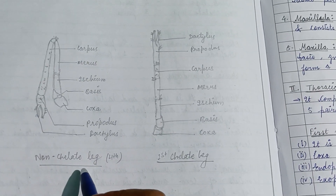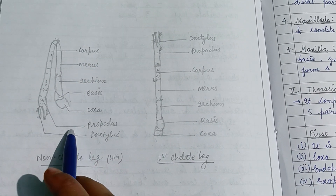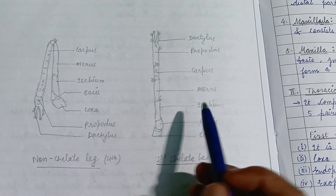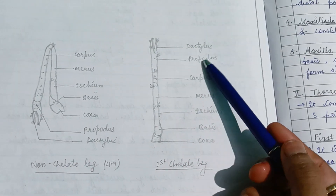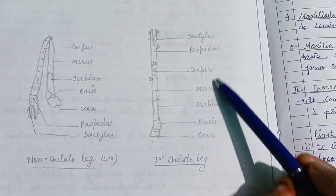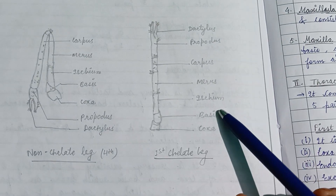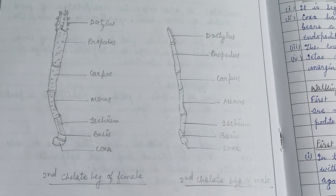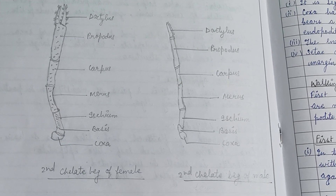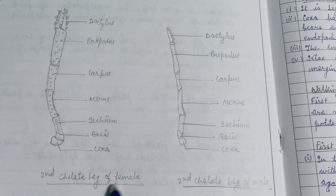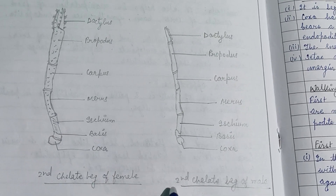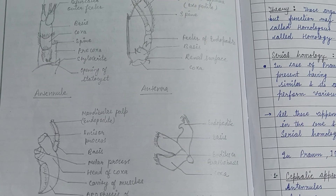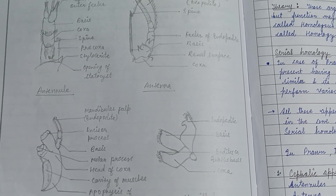The non-chelate leg is larger than the 1st chelate leg and is divided into dactylus, propodus, carpus, merus, ischium, basis, and coxa. The chelate leg figure shown is slightly different between male and female. Thank you for watching.